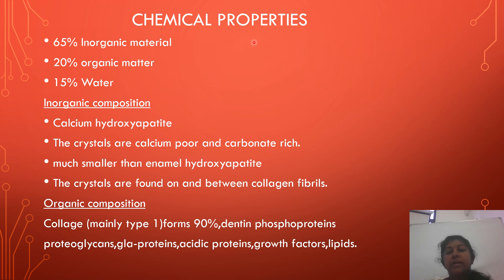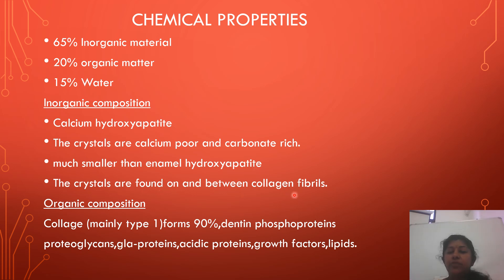Coming to the chemical properties. In dentine, 65% is inorganic material, 20% is organic matter, and 15% is water. The inorganic composition of dentine is calcium hydroxyapatite crystals. These crystals are calcium-poor and carbonate-rich, much smaller than enamel hydroxyapatite, and these crystals are found on and between collagen fibers. The organic composition of dentine is mainly collagen type 1, which forms 90%, and also contains dentine phosphoproteins, proteoglycans, glycoproteins, acidic proteins, growth factors, and lipids.